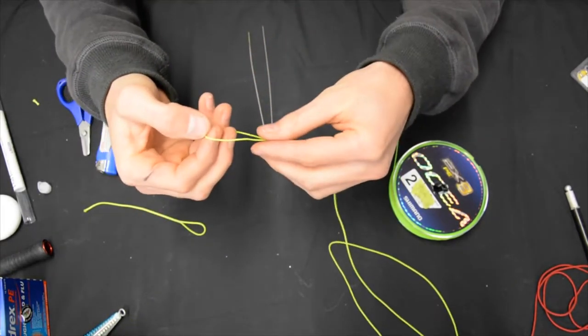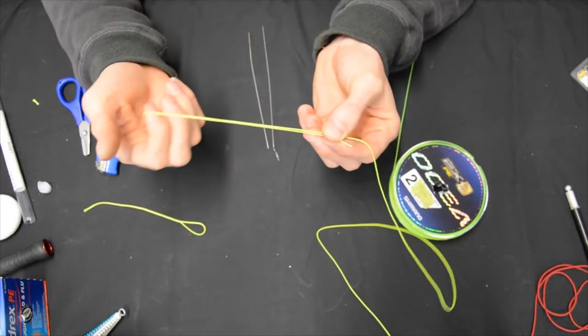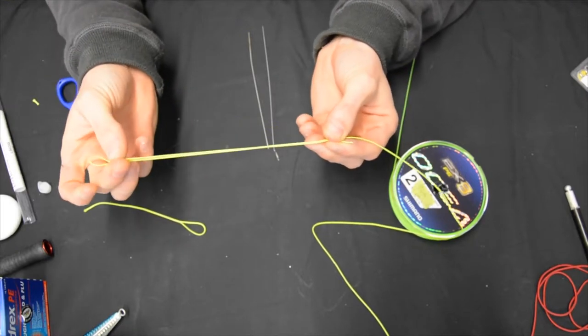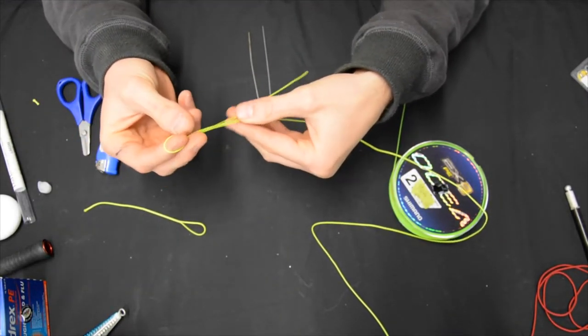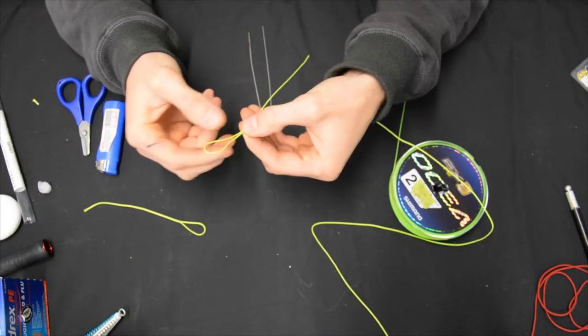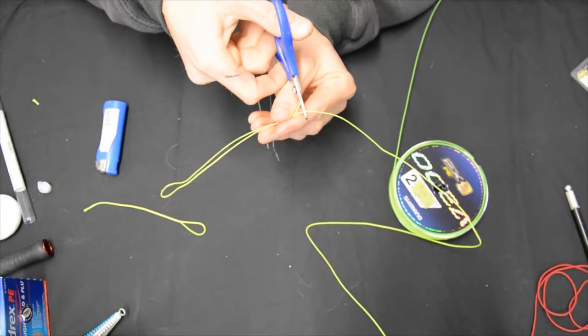Basically from there we're going to get our Dacron. We pick how long we want to make our loop. Now some people like this very long, some people like their loops very very long. I don't, I find I don't need them huge because I'm using 50lb Dacron on 80lb line. I find I don't have to make them super long. So just measure out how long you'd like it. Cut it there.